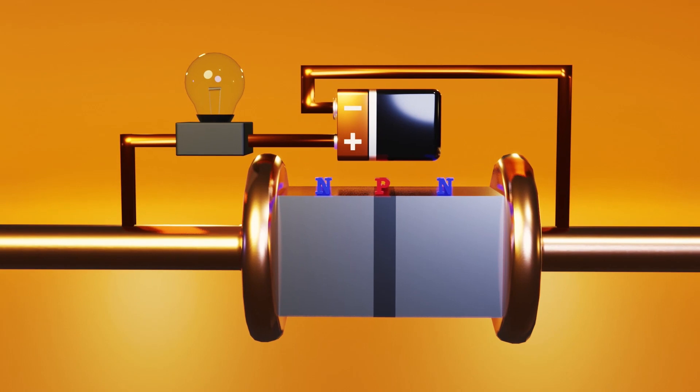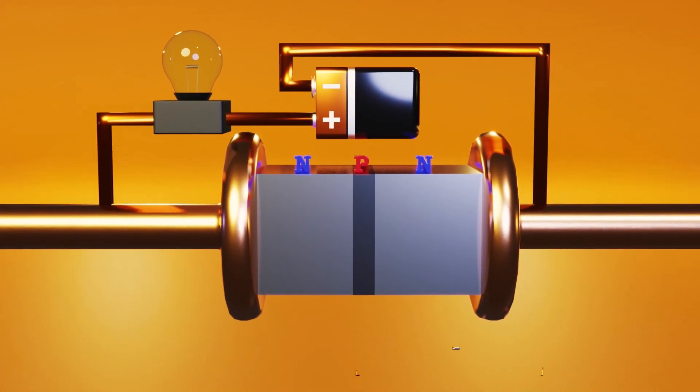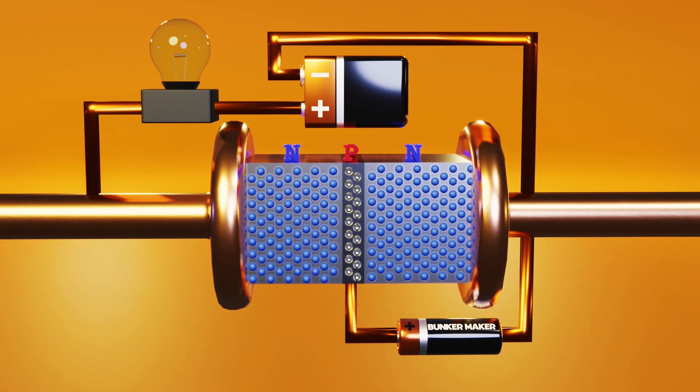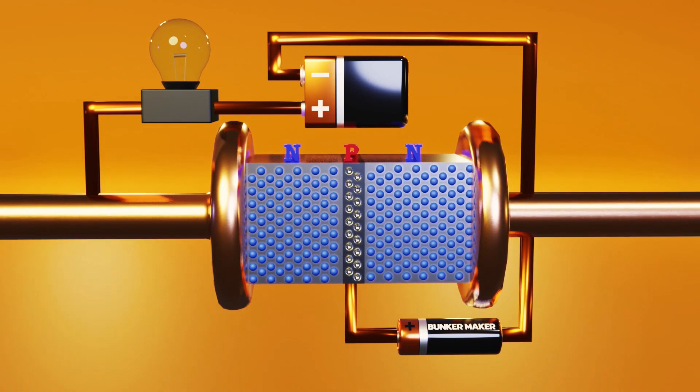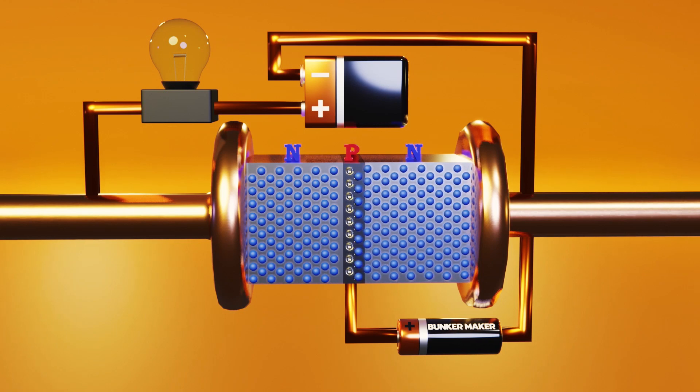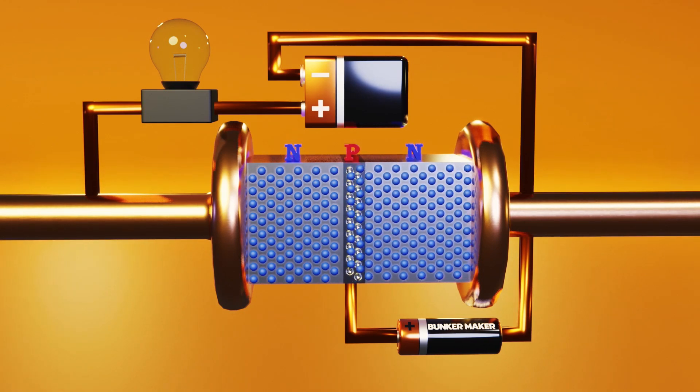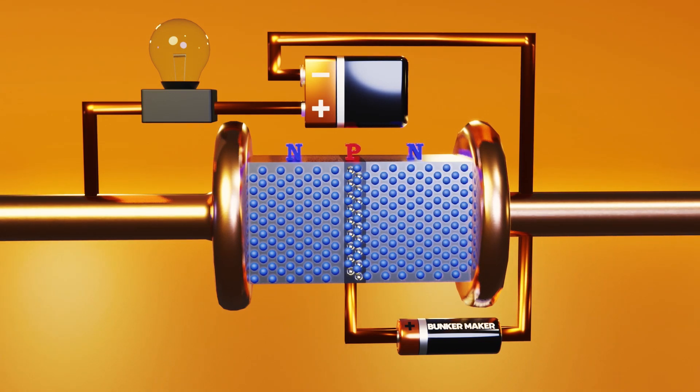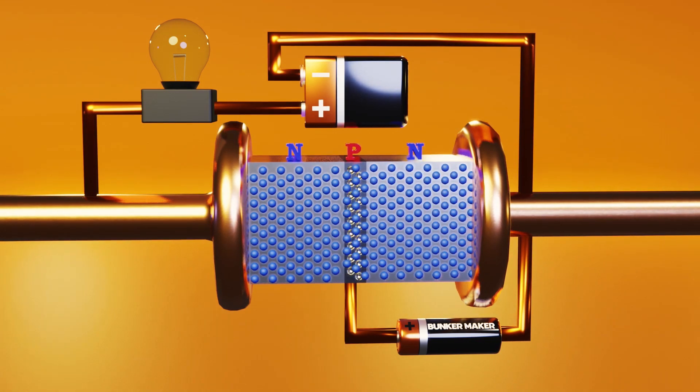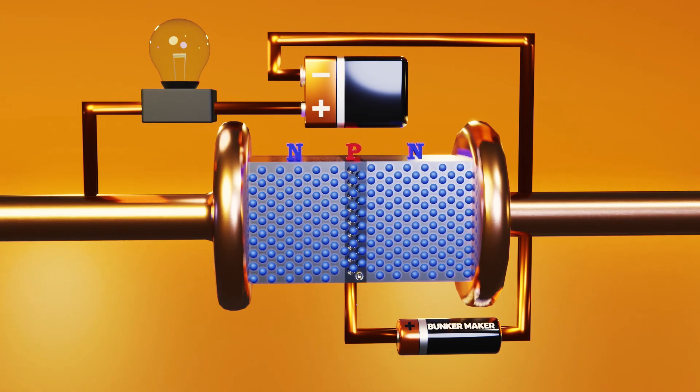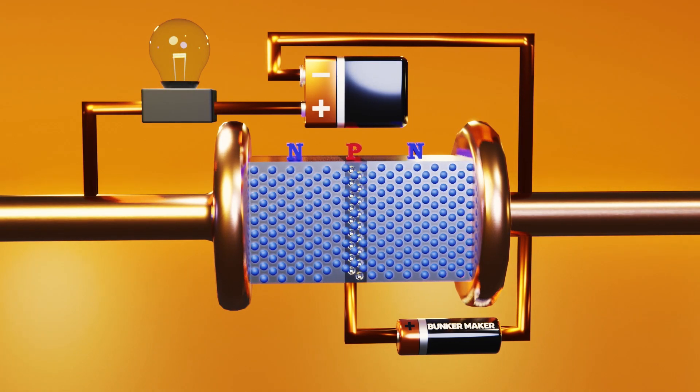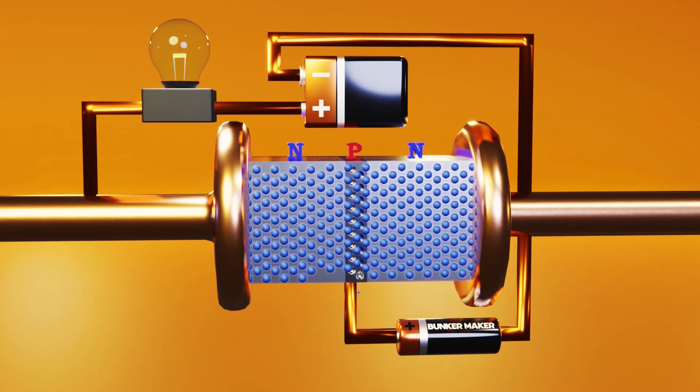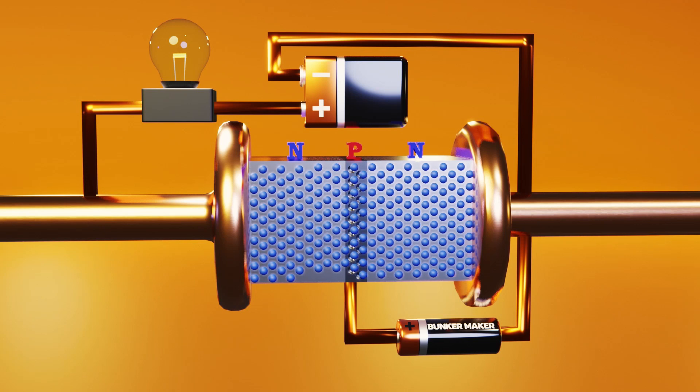But now comes the interesting part. If we want a current to pass through our transistor, we can add a small voltage difference in the semiconductor type P. What will happen is that the section on the right will act as a diode in direct polarization letting the current through. But not only that, when starting the movement of electrons in the semiconductor type P, the electrons in the type N semiconductor on the left will benefit and also begin to move. Note that this only happens because the P type semiconductor is extremely thin, so don't try to make a transistor with two diodes because it won't work for you.